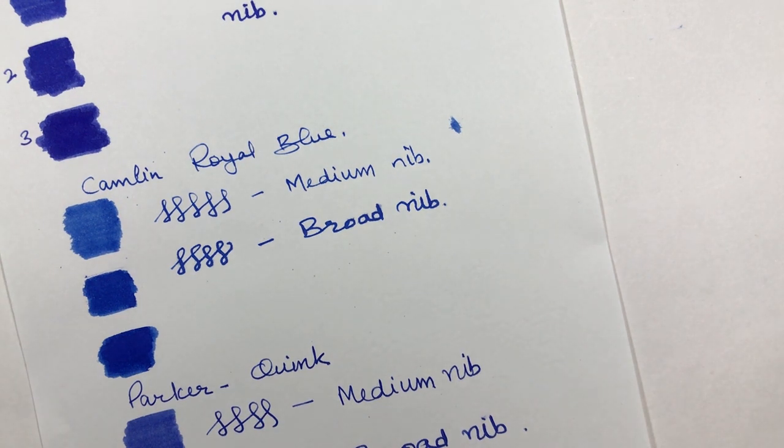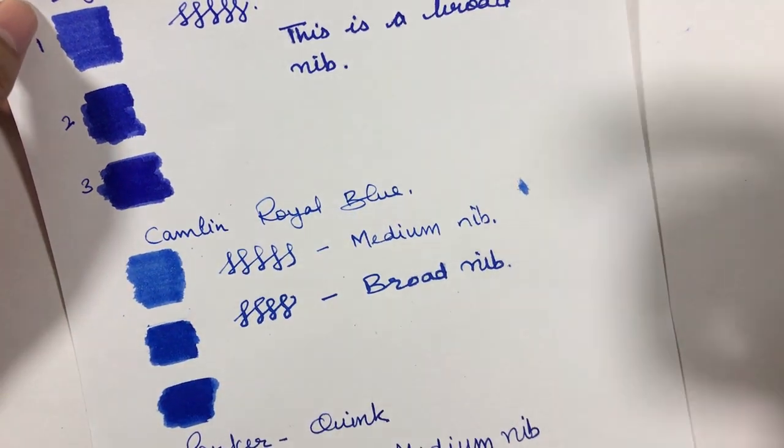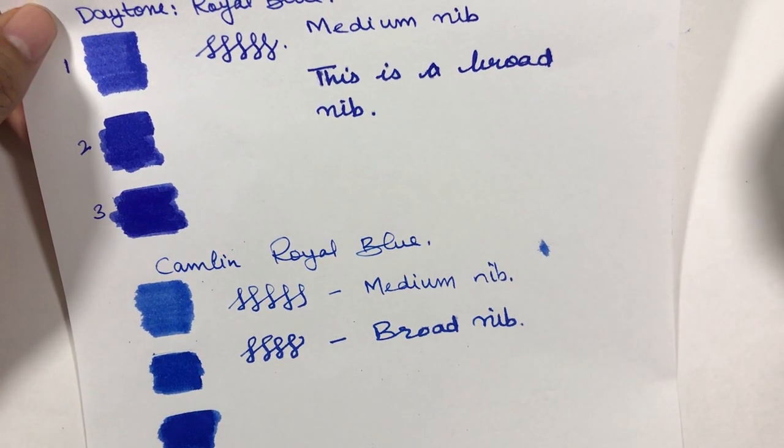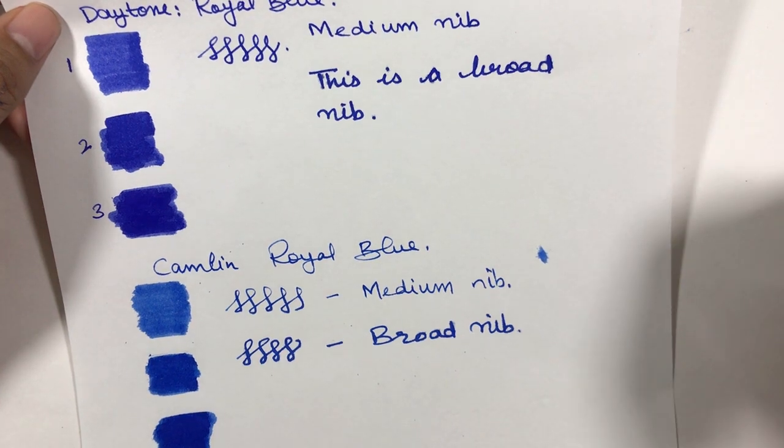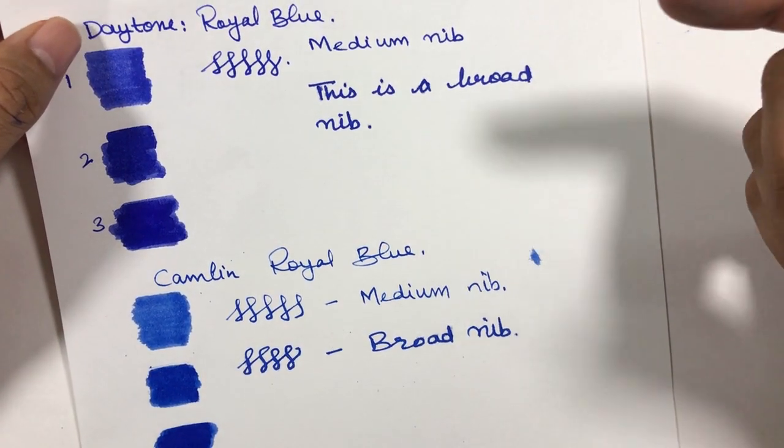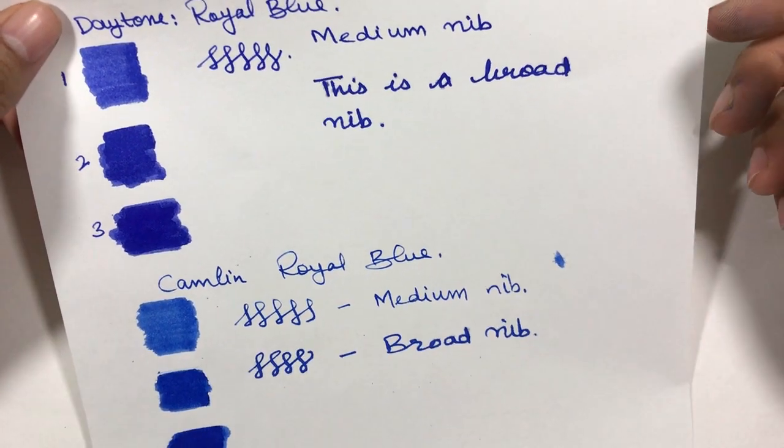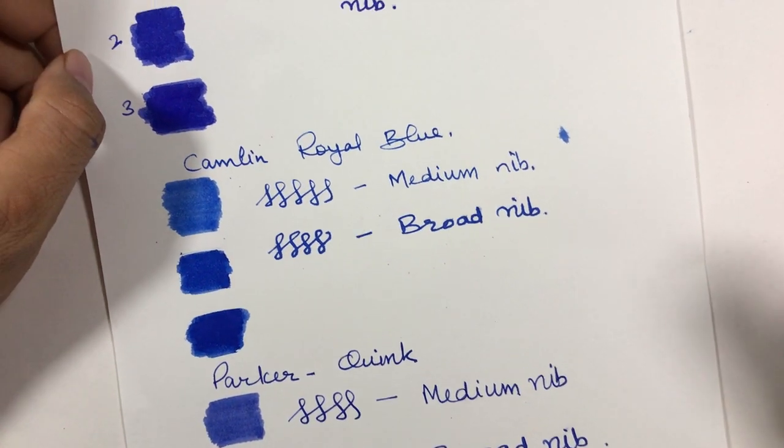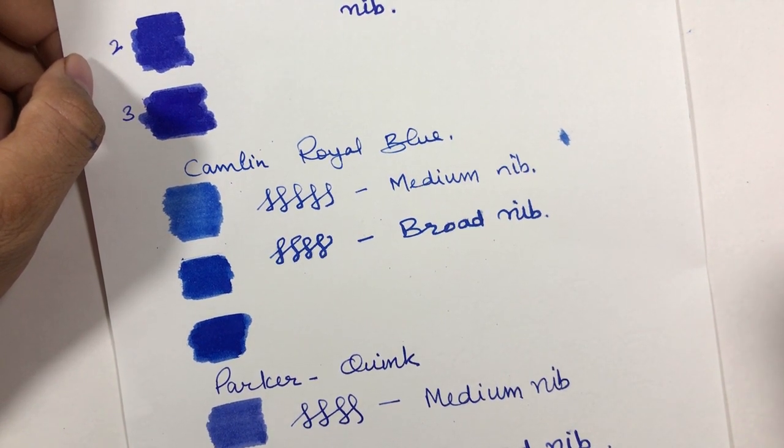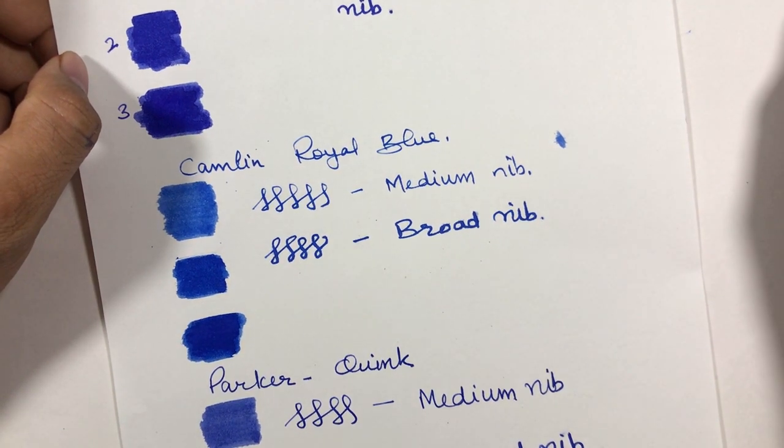Out of these three inks, all are cheap inks. I have not used Daytone much in my fountain pens, but I have used Camlin and Parker. Parker and Camlin both are easily washable, they clean well from the fountain pens. I don't know about the Daytone, I'll use it and then tell you again when I do a review for Daytone separately. Otherwise, Parker is the best ink you can get in the Indian market. It is a bit costly, for 60 ml you have to pay 100 rupees.